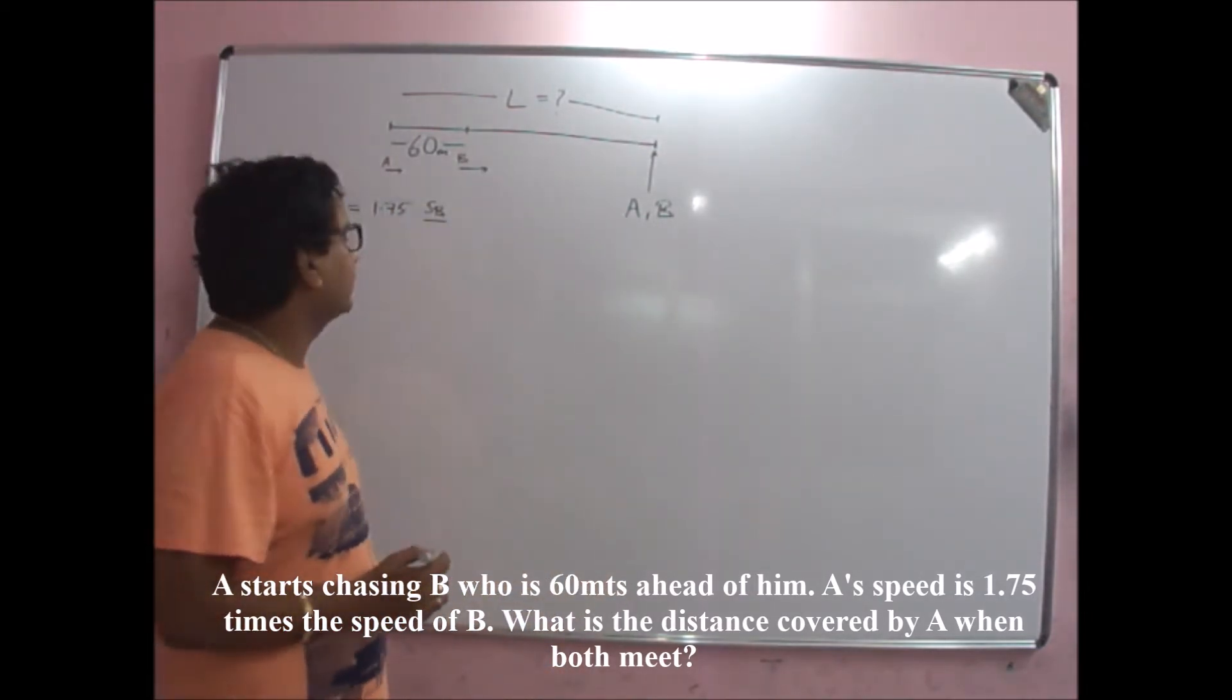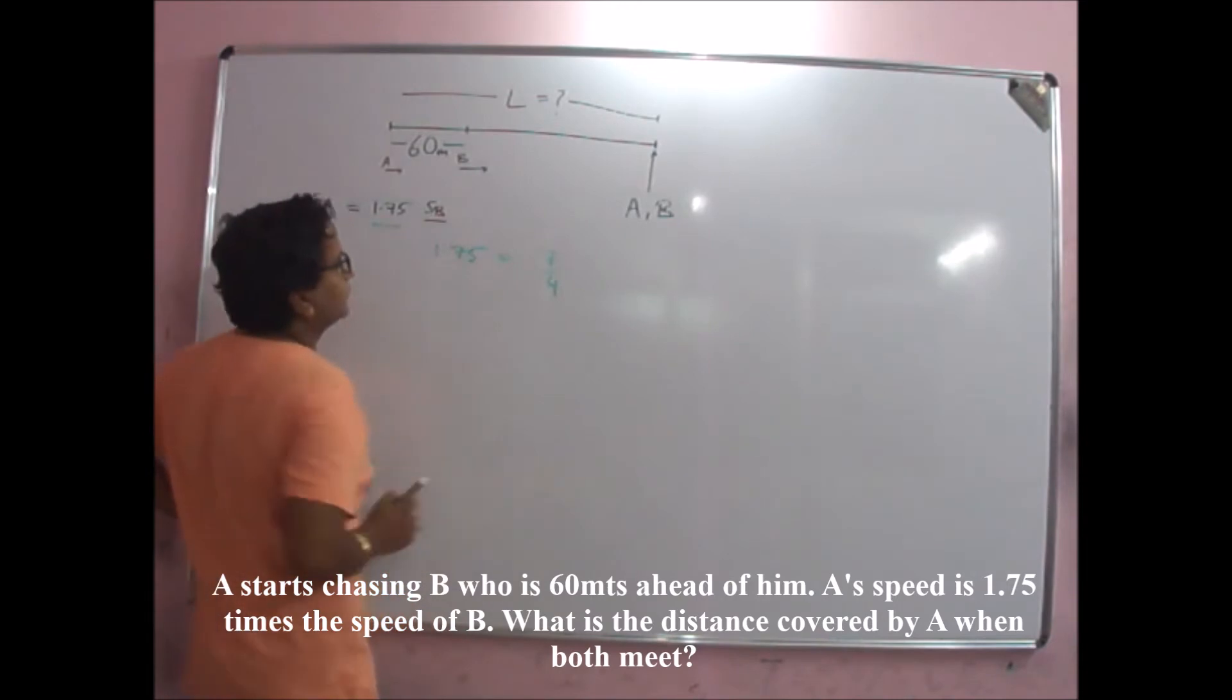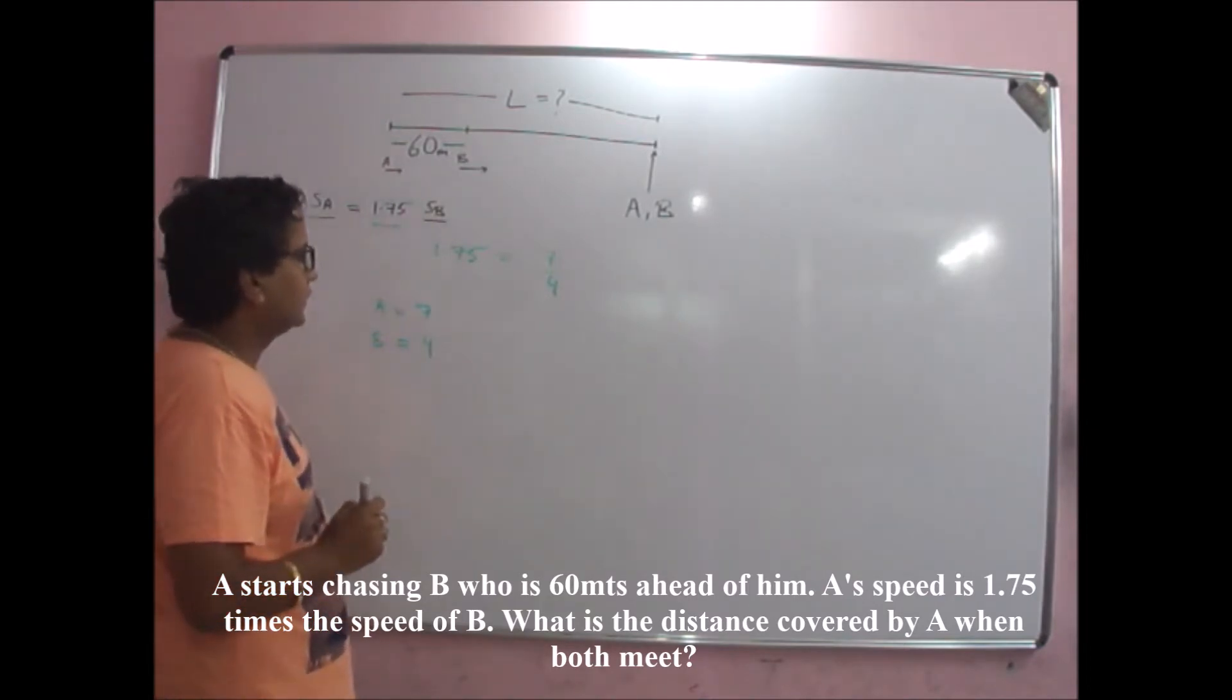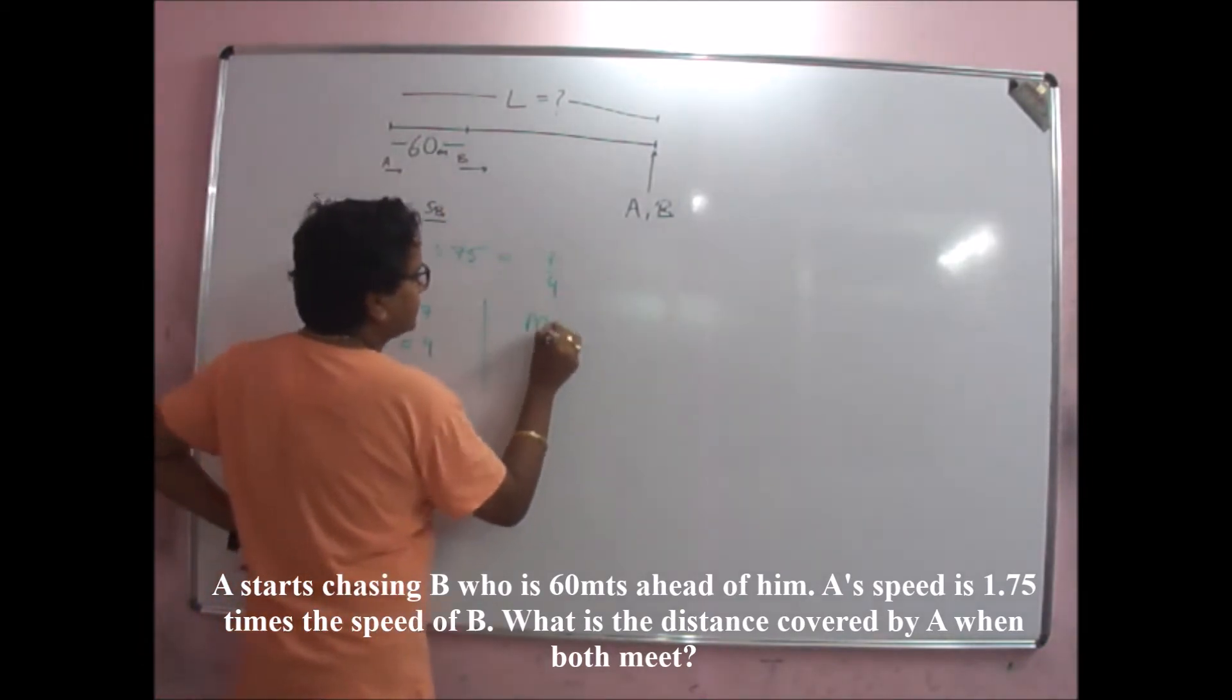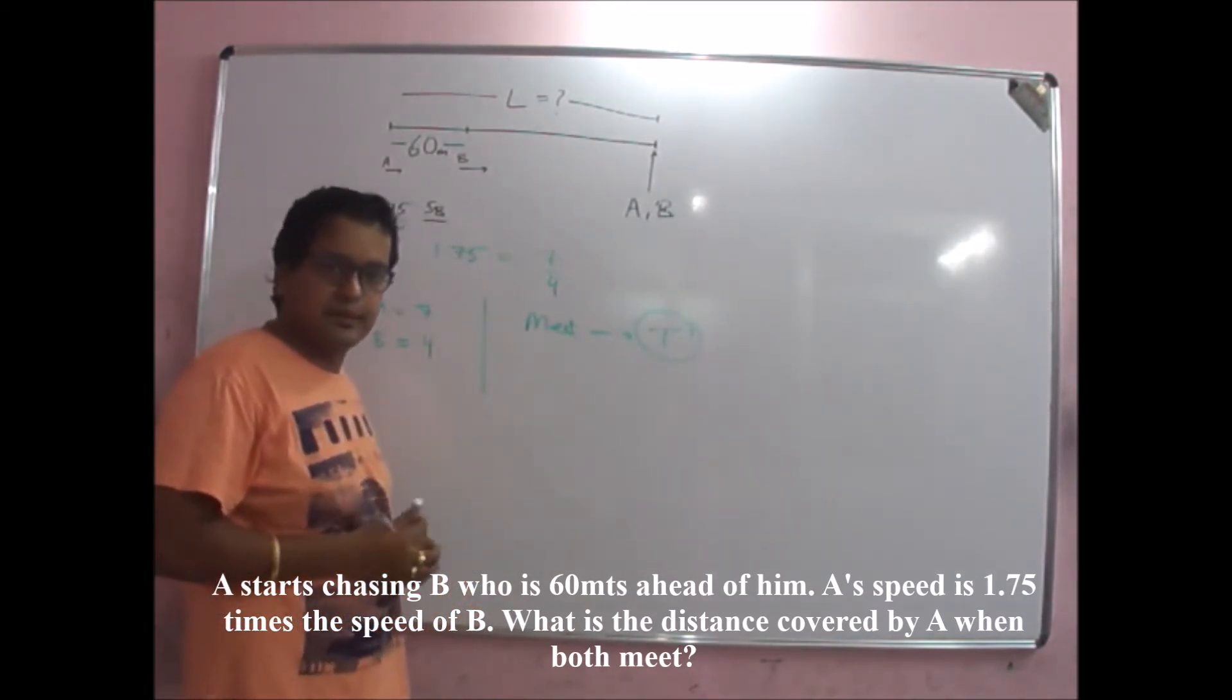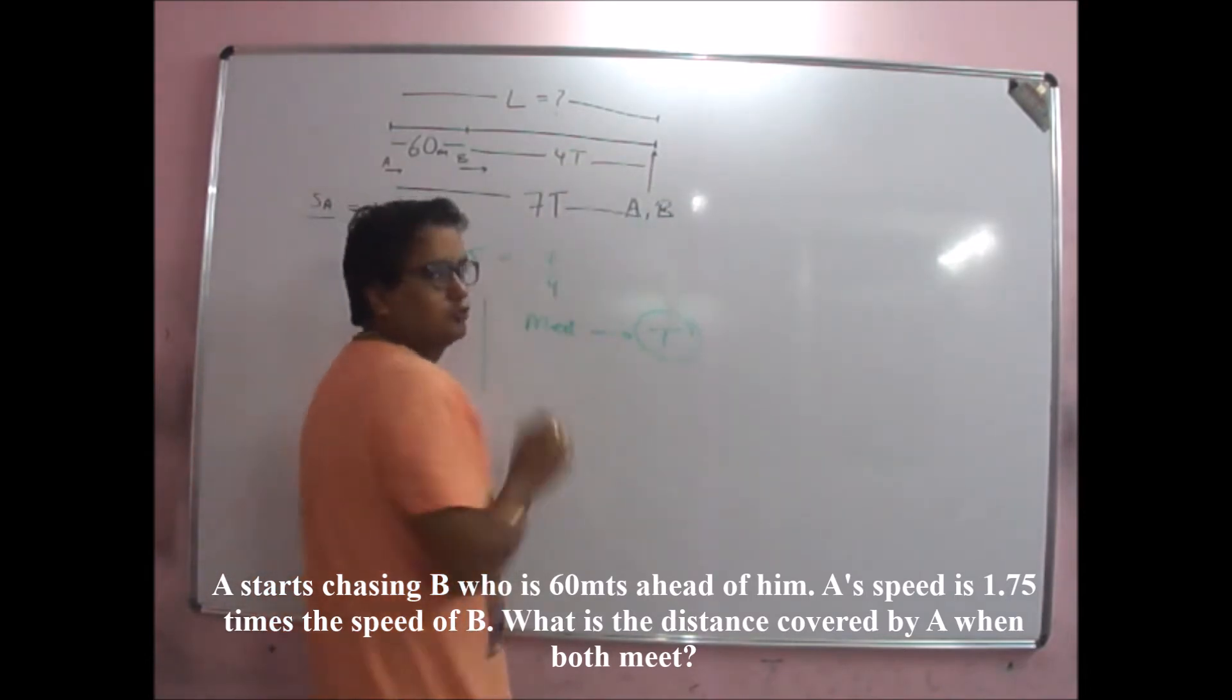So if you look at this question, 1.75 can be written as 7 to 4. So let's take speed of A as 7 and that of B as 4. Now by this logic, if we assume that they meet in time t, then A would have travelled 7t and B would have travelled 4t.